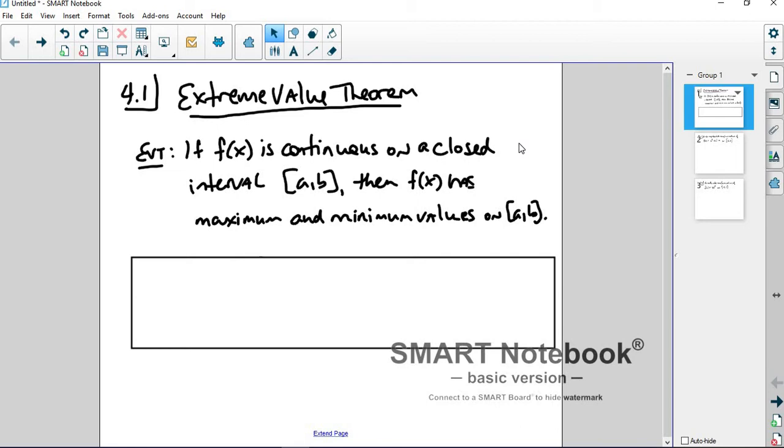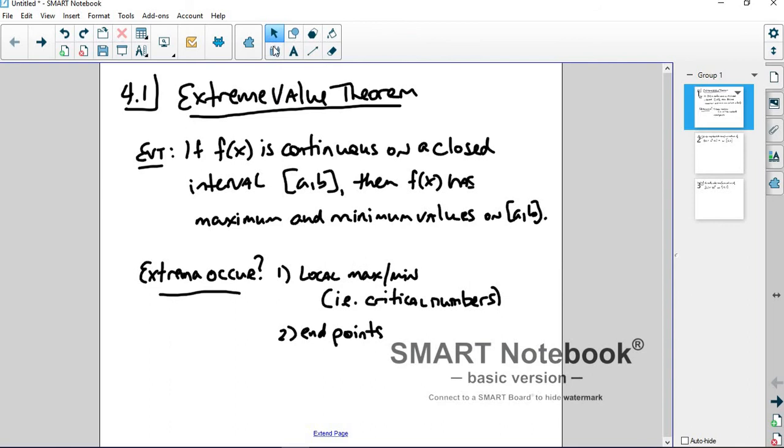So then the real question for us in this section is not necessarily when do you have them, because if you're continuous on a closed interval, and that's what we're going to do most of the time, you're going to have them. That's not the issue. The issue is how do we find them? Where do these extreme values occur?